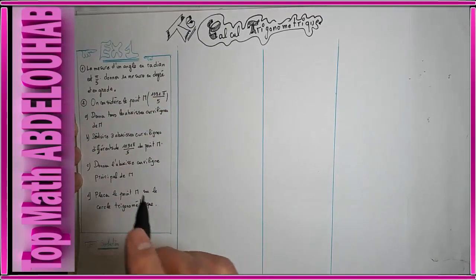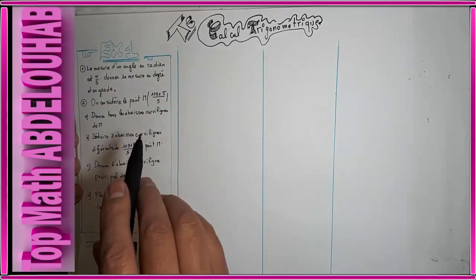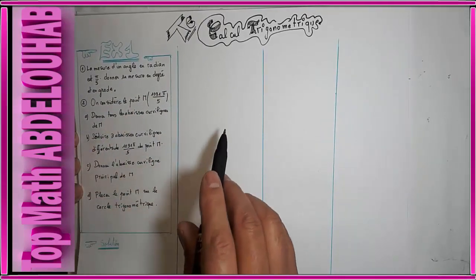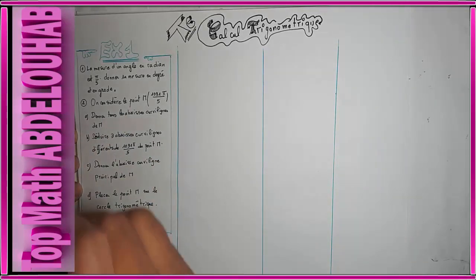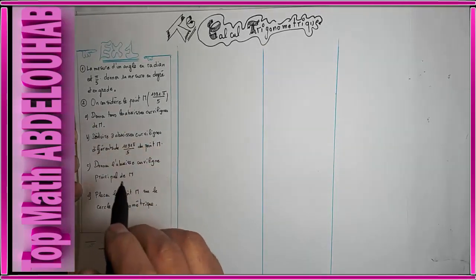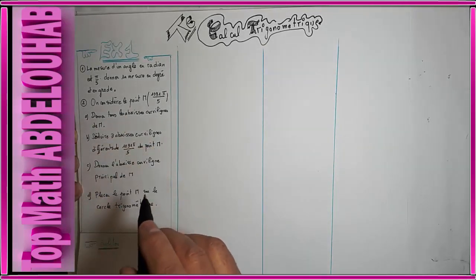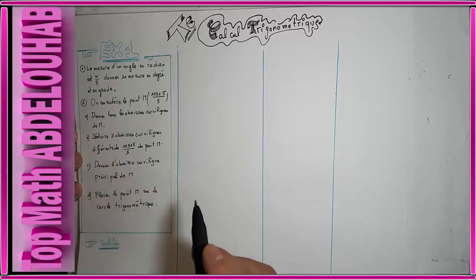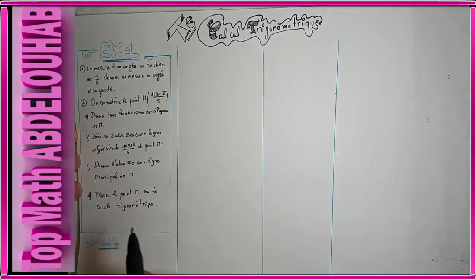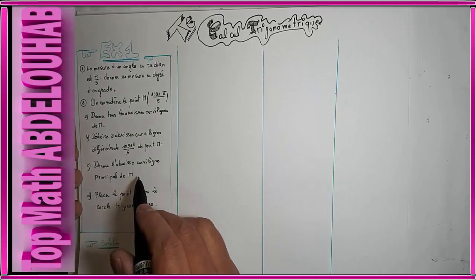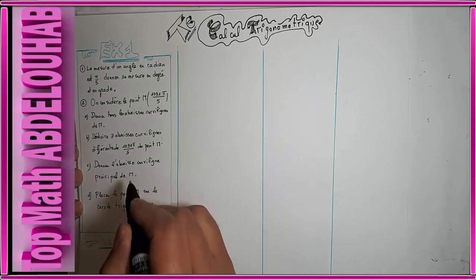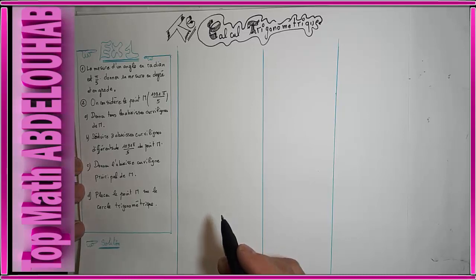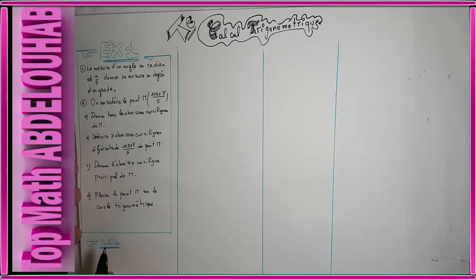La deuxième question : on considère le point M d'abscisse curviligne 1091π/5. Petit a : donner tous les abscisses curvilignes du point M. Petit b : déduire trois abscisses curvilignes différentes de 1091π/5. Petit c : donner l'abscisse curviligne principale de M et placer le point M sur le cercle trigonométrique, avec la solution en détail.